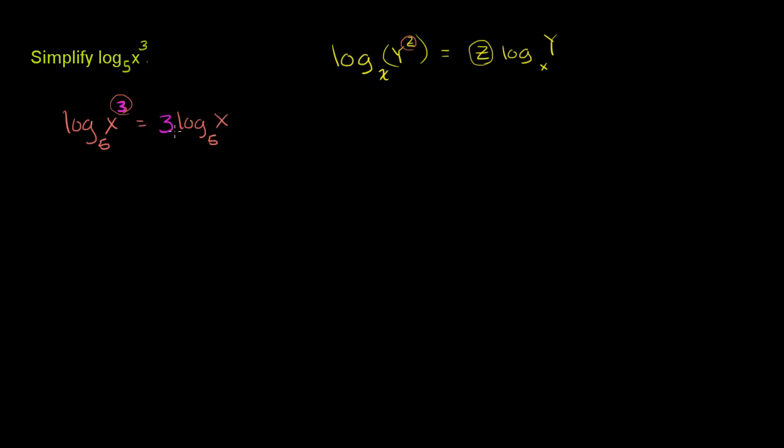And we're done. This is just another way of writing it using this property. You could argue this is a simplification because we took the exponent outside the logarithm and are now multiplying by that number. Now let's think about why this actually makes sense.